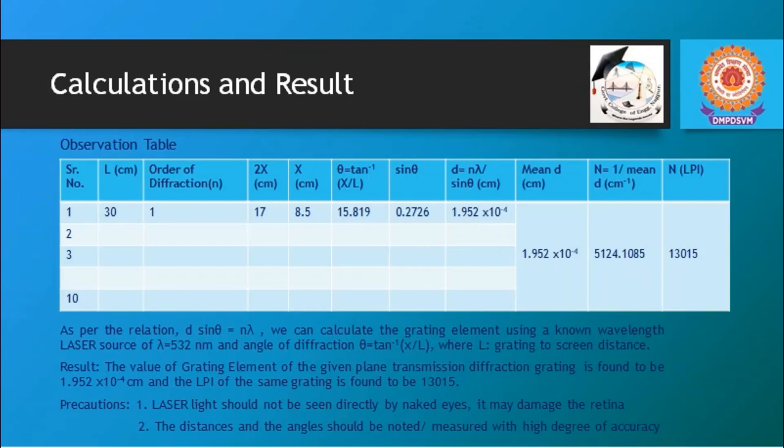We should take as much as possible observation in order to get our results more accurate. So either you can change l, you can change the order of diffraction and hence you will get different 2x and x. And therefore θ and you will get different values of d. If you take at least 10 observations you will get a bit accuracy in your experimental part. And therefore the mean d can be calculated in our case it is 1.952 multiplied by 10 to the power minus 4 cm. As we have taken single observation.